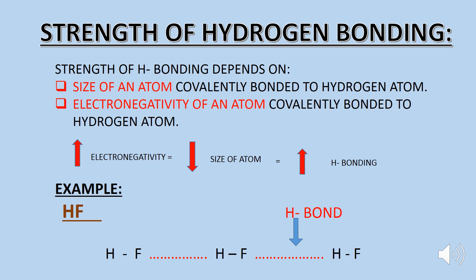In the hydrogen fluoride molecule, one hydrogen fluoride makes a hydrogen bond with another hydrogen fluoride. Since fluorine is the most electronegative atom in the periodic table, its electronegativity is high. As a result, the fluorine atom is small in size and has a greater ability to pull electrons, which results in an increase in the strength of hydrogen bonding.